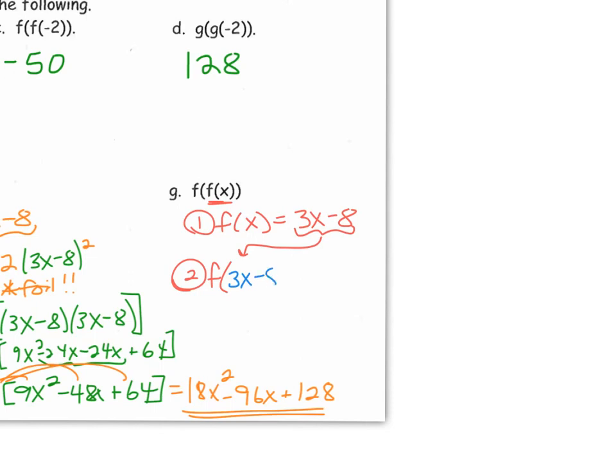Whoops. And there we go. So wherever we see x in the f of x function, we're now going to plug in that entire parentheses. So I have 3 times x, but now it's going to be 3x minus 8. And then we have minus 8 again.